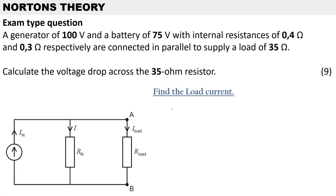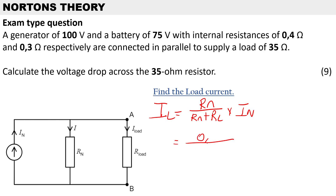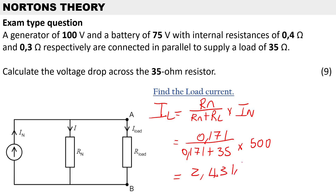The next step is to calculate the load current IL. We use the current divider rule: IL equals RN over (RN plus RL) multiplied by Norton's current. Substituting in: 0.171 over (0.171 plus 35 ohms), multiplied by 500 amps, gives us 2.431 amps.